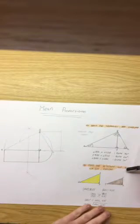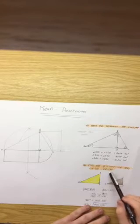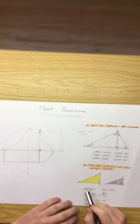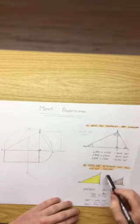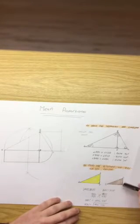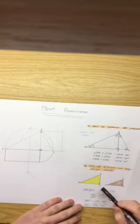To find the altitude of BD, which is the mean proportion, we use ratios. The length of AD is in proportion to the length of BD. The length of BD is in proportion to the length of CD. We then put these in fractions.